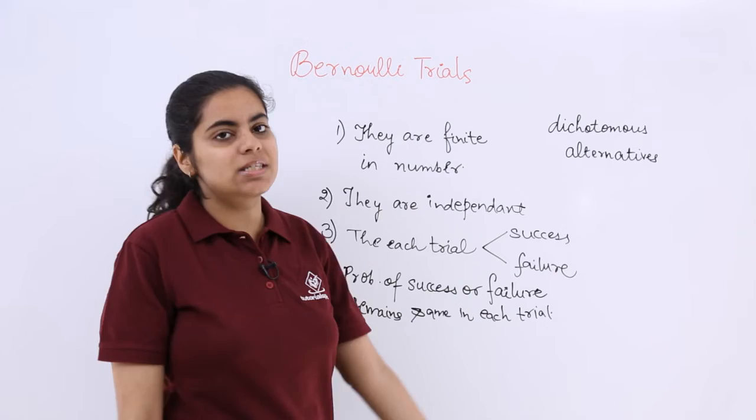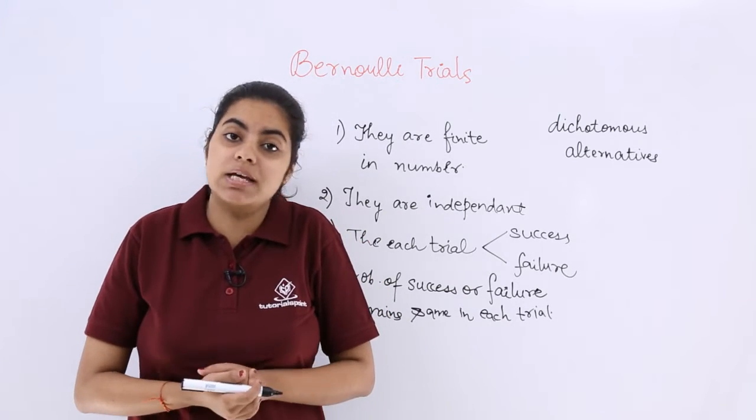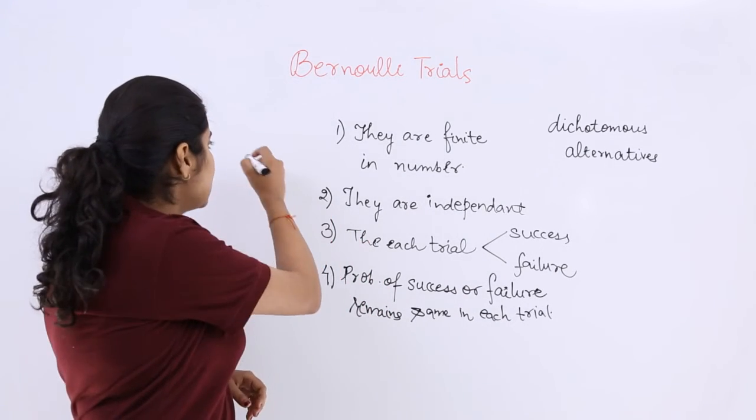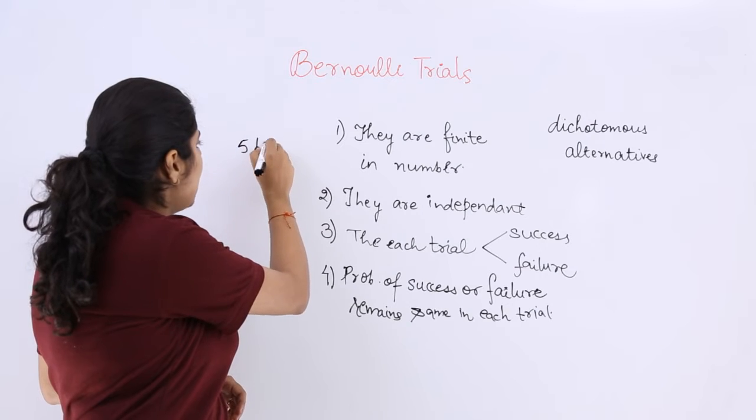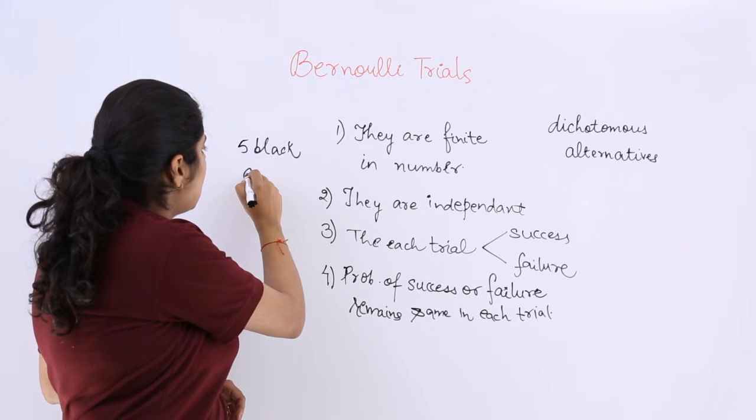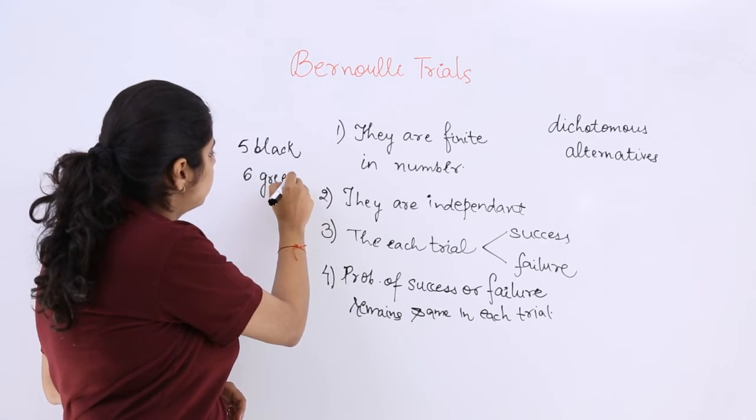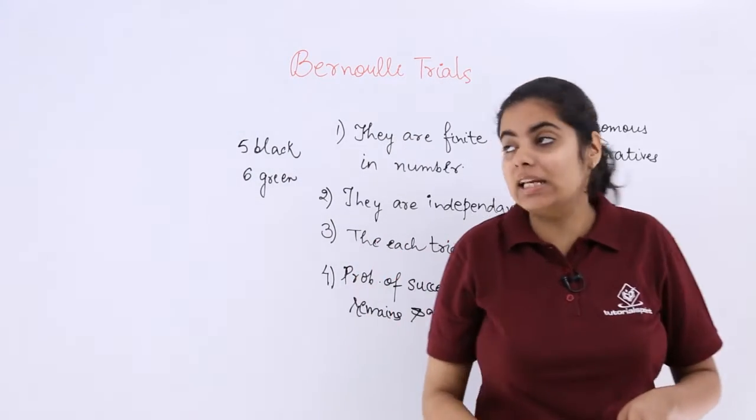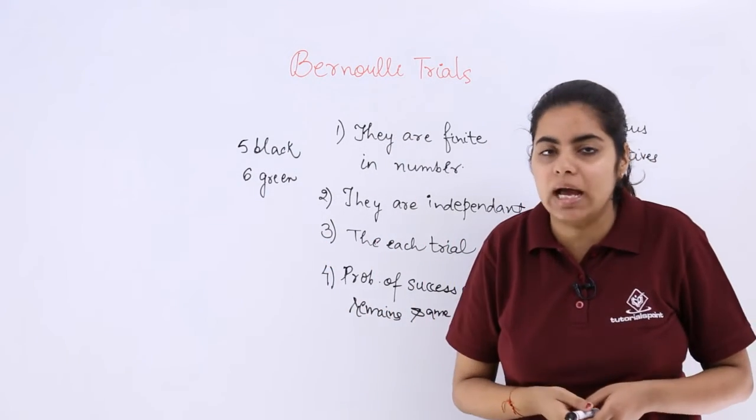Now with these points in mind, let me take an example. Suppose there is a bag and the bag has 5 black balls and 6 green balls. So 5 black balls and 6 green balls are a part of the bag.